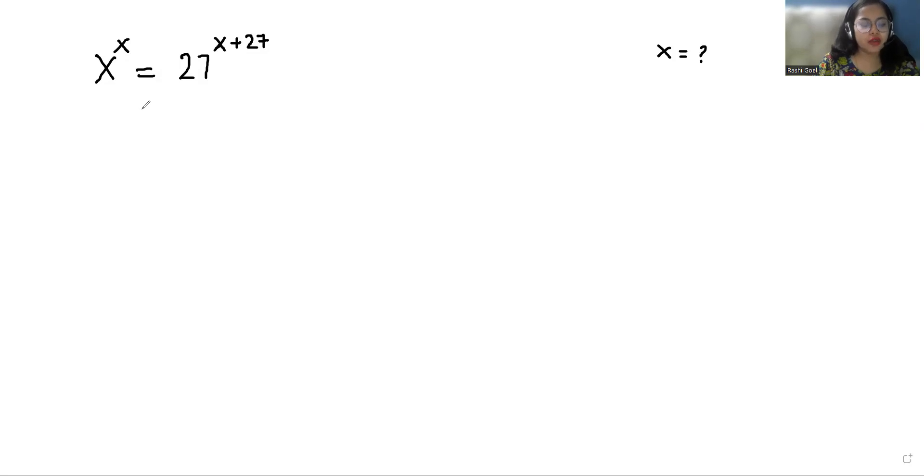So let's start with today's video solution. x power x equals, according to exponent rule x power m plus n, we can write it as x power m times x power n, so 27 power x times 27 power 27.